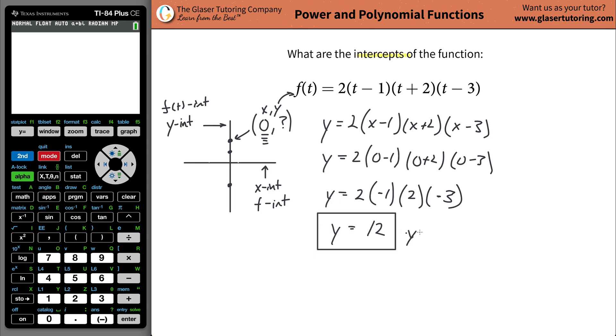So the y value equals 12. This is your y-intercept. In other words, when x is zero, the y value will be 12. So why don't we just take this and keep it on the side? That's the y-intercept.